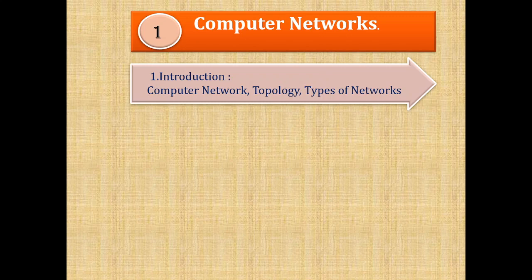In simple terms, a Computer Network is a collection of computers connected together with an intention to share resources. Such a formation of computers where they are connected using some Transmission Media and some Software — the combination of Hardware and Software — makes a Network. We are going to study in detail what is a Computer Network, what are its Components, Types, and many more things.